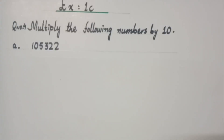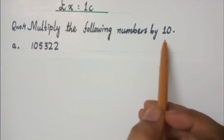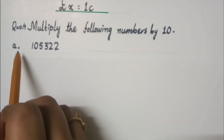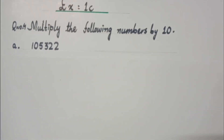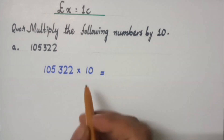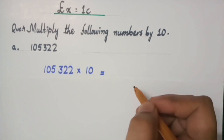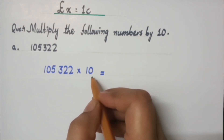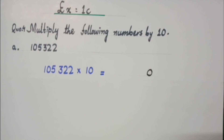Let's practice this rule of multiplication and division in exercise 1c of your book. Here we have question number 4: multiply the following numbers by 10. The number we have in part (a) is 105,322. Let's multiply this by 10. What was the rule for solving by 10? First of all, place zeros to the right. How many zeros are in 10?